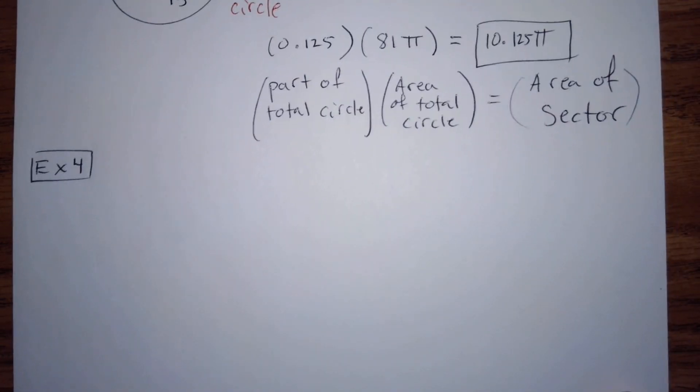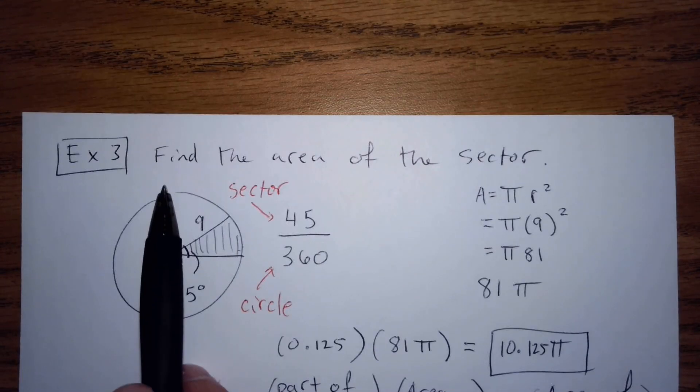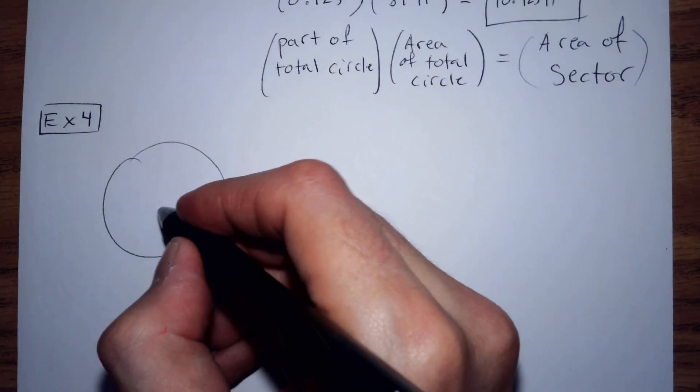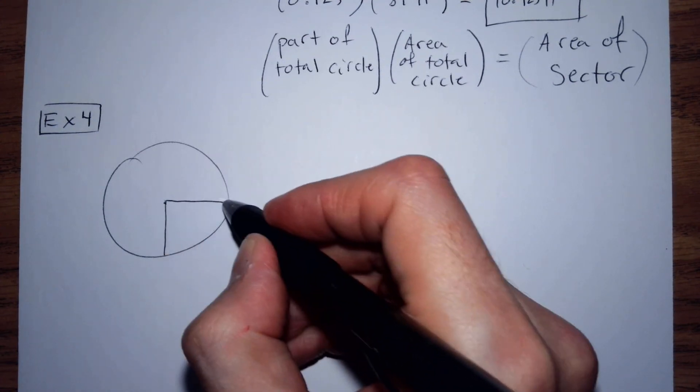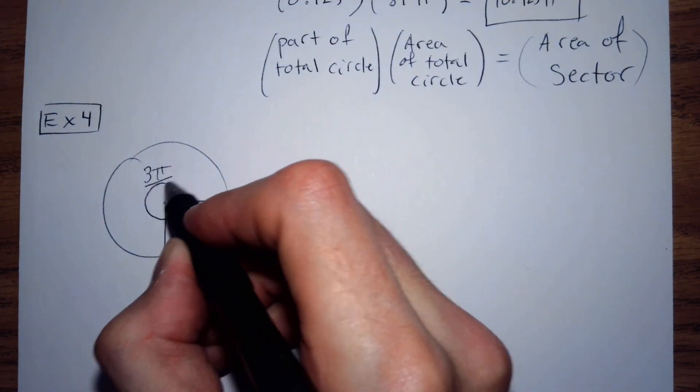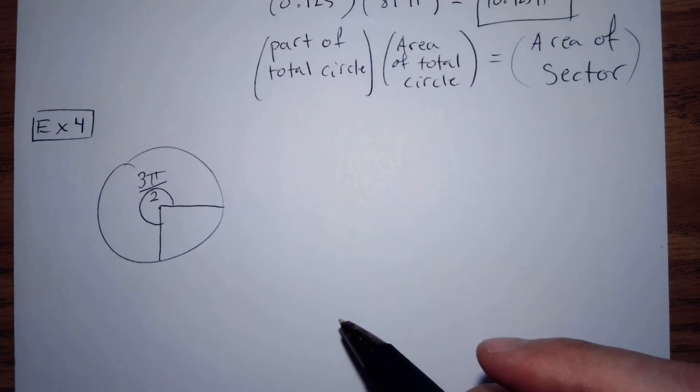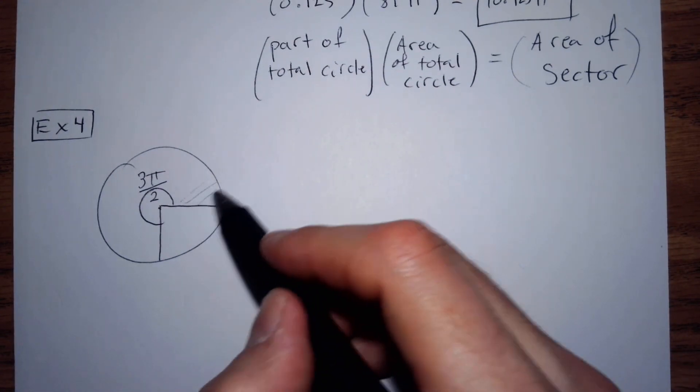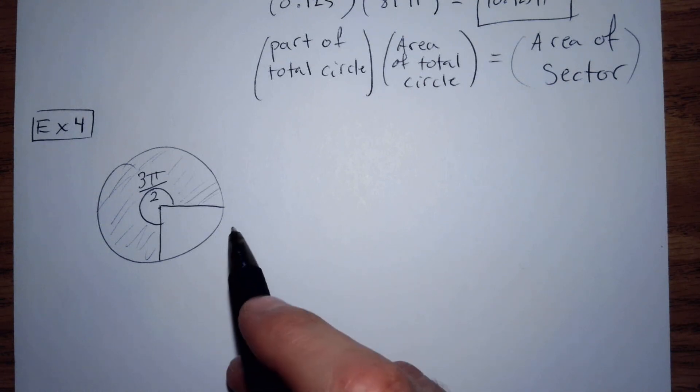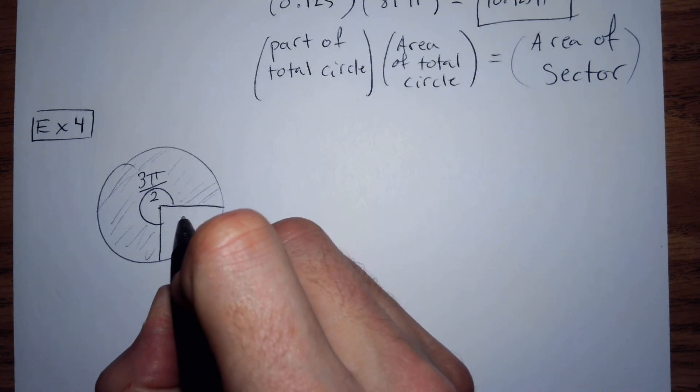For the last example, we're going to have the same instructions, but it's going to be with radians. Same instructions, find the area of the sector, but we're going to have that's 3 pi over 2 radians. So we're finding this area. Actually, I didn't write that yet, but the length of this radius will be 10.